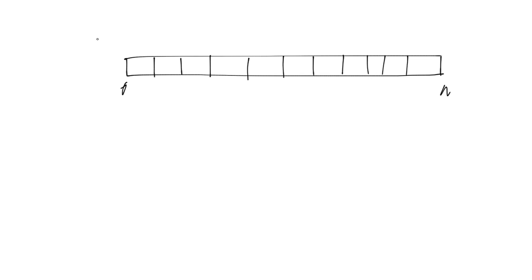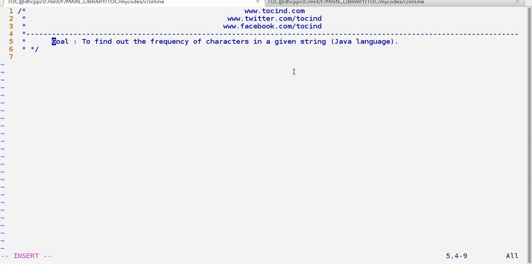Let's take up an array of characters. Say the elements are A, B, A, B, L, M, N, T, K, L, A. We have to count how many times A is present in this array, how many times B is present. And once the frequency of a character has been recorded, that character shouldn't be processed again. This is our main fundamental.